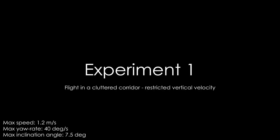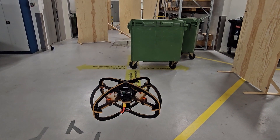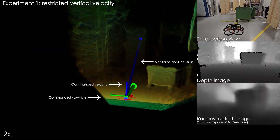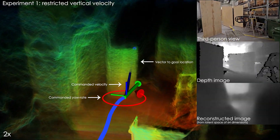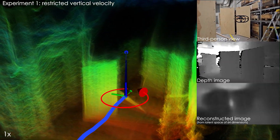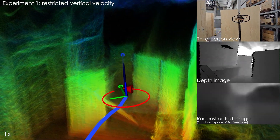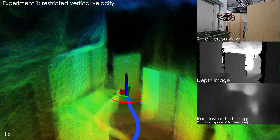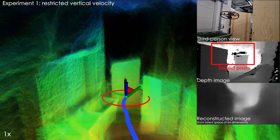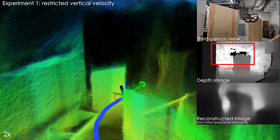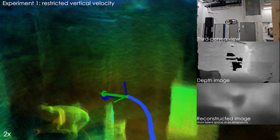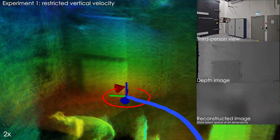We conduct three real-world experiments to verify our proposed method. In the first experiment, the robot is tasked to navigate a cluttered corridor with its vertical velocity restricted. The policy accelerates and decelerates as required to safely navigate the robot to the goal despite sensor noise and invalid pixels in the real-world depth images.